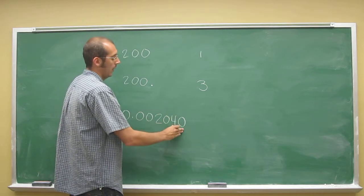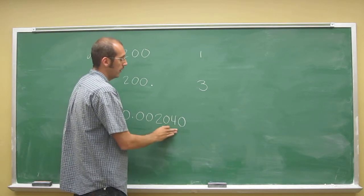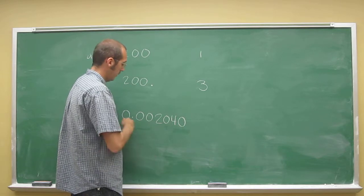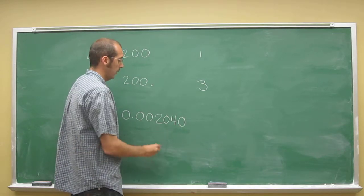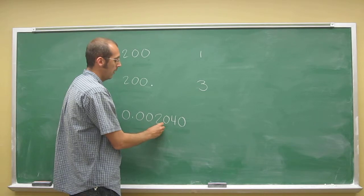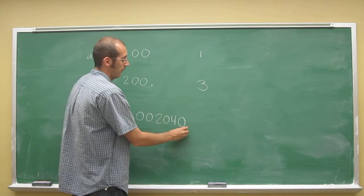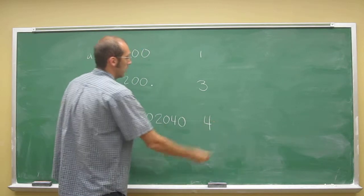Yeah, always significant. And trailing zeros are significant if they're after the decimal point. So what do we got? We got one, two, three, four significant digits.